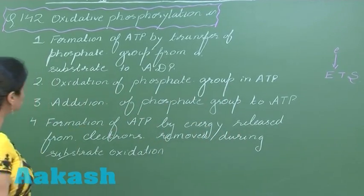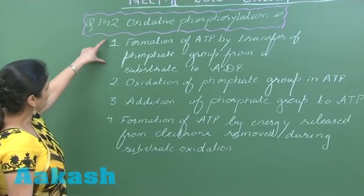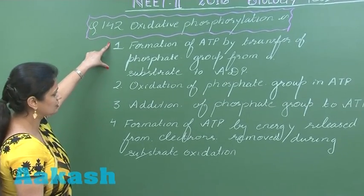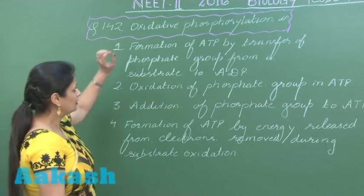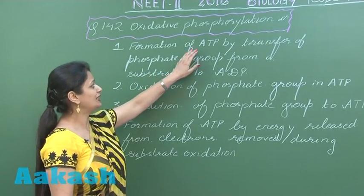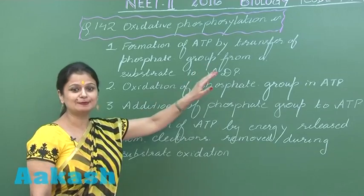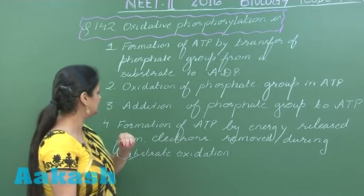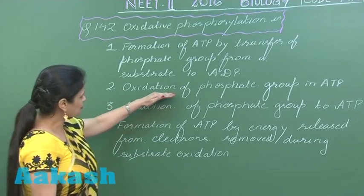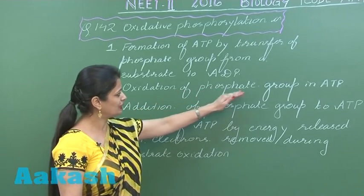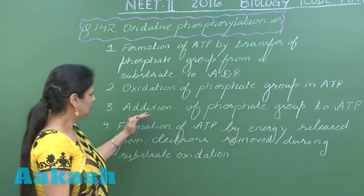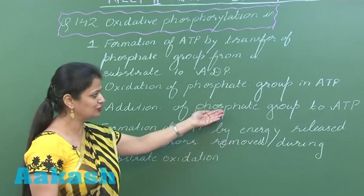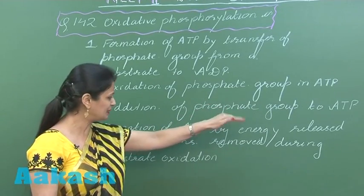Looking at the options: the first option — formation of ATP by transfer of phosphate group from a substrate to ATP — explains only phosphorylation, not oxidative phosphorylation. The second option — oxidation of phosphate group in ATP — is wrong. The third option — addition of phosphate group to ATP — is incorrect because it should be addition to ADP, not ATP.